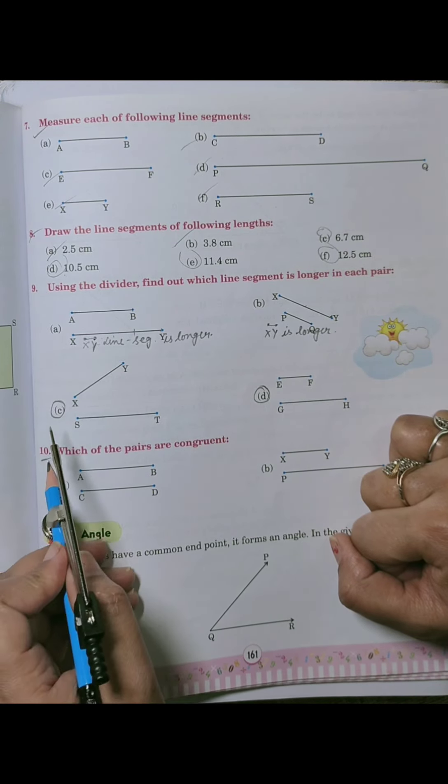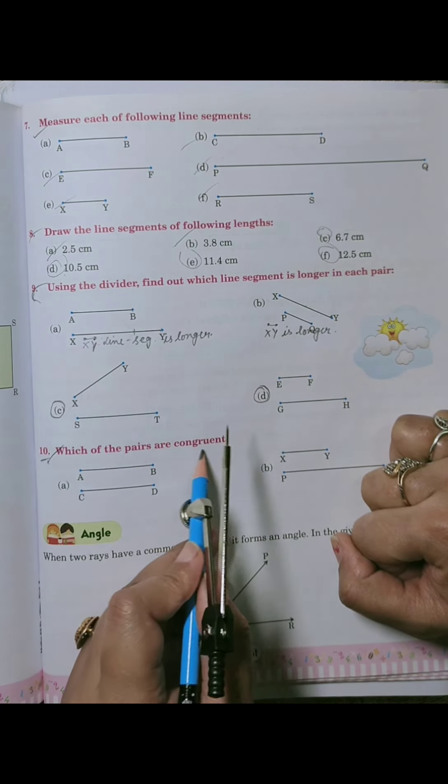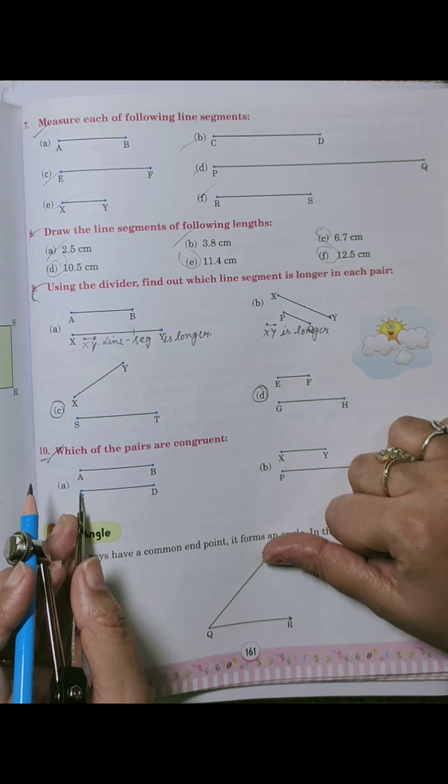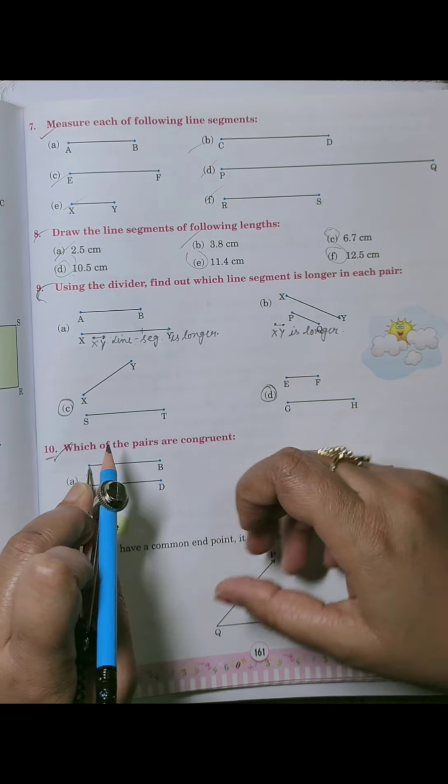Next is sum number 10. Which of the pairs are congruent? So congruent means having same length. So we will check length with the help of divider.